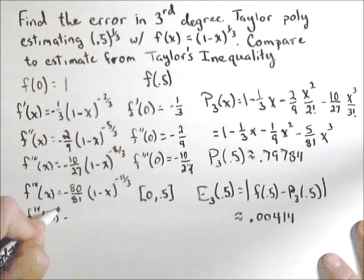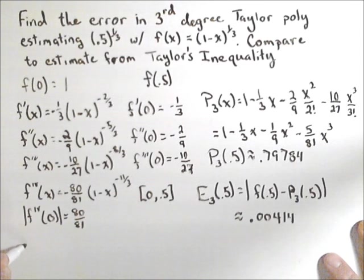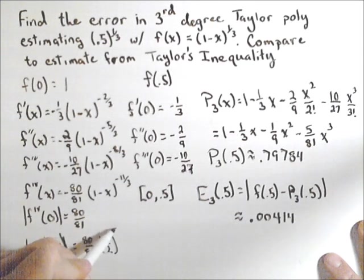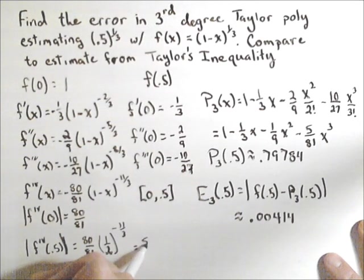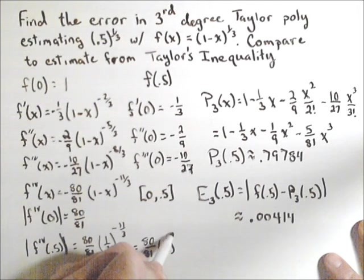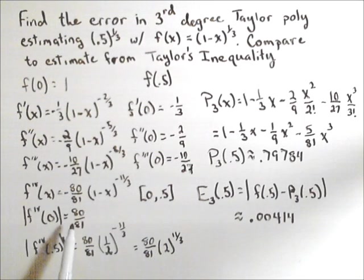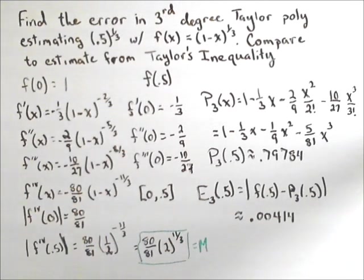So the fourth derivative evaluated at 0, and we do the absolute value of this because we want the largest magnitude, so we can drop the negative, is 80/81. The fourth derivative at our other endpoint of 0.5 is equal to 80/81. I'm going to write it, 1 minus 0.5 is 1/2, I'm going to write it as 1/2 because it will help with how I'm going to simplify this, to the -11/3. Now because of the negative, I can take the reciprocal here, and I get 80/81 times 2^(11/3). Well this is definitely going to be larger, because I can tell I'm taking the 80/81 and now I'm multiplying it by 2^(11/3), so that's going to make it bigger than 80/81. So what I have here is my m.